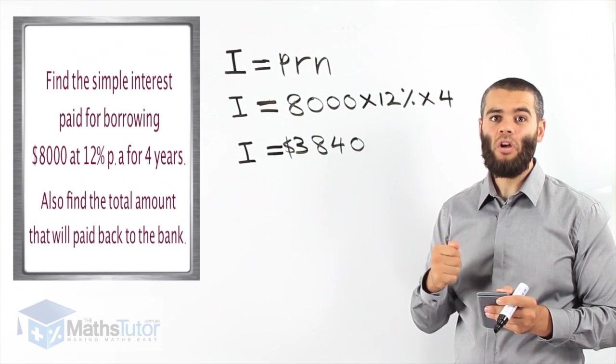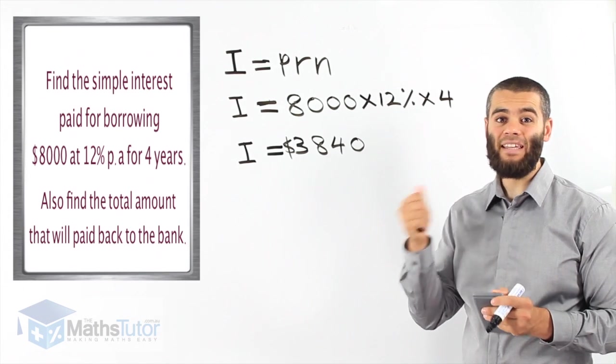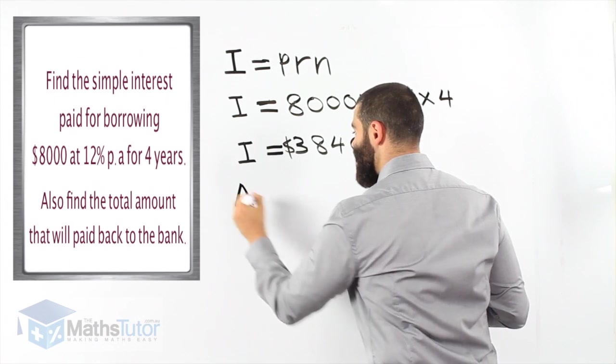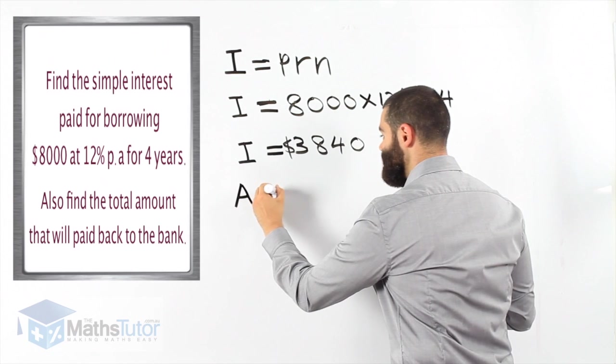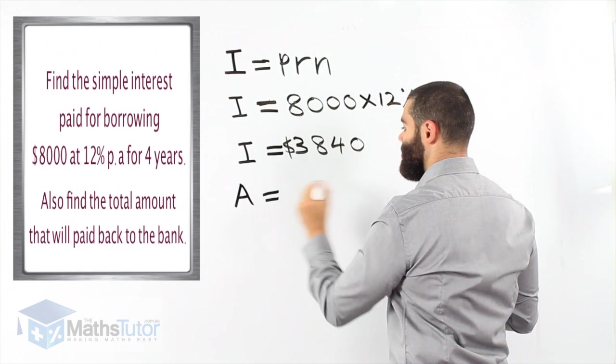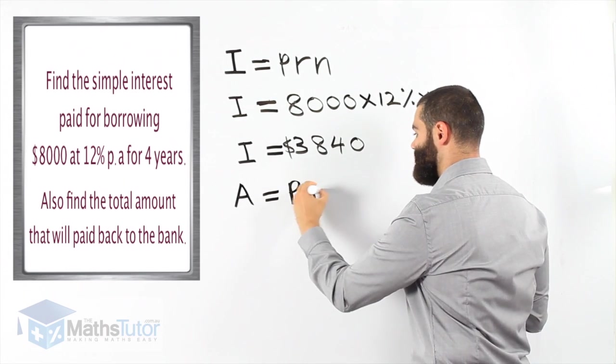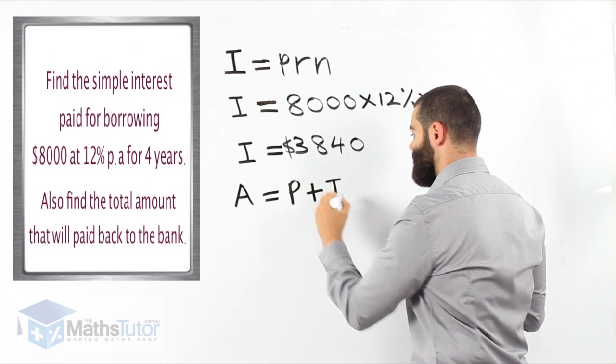They're going to pay back the $8,000 plus they're going to pay back $3,840 in interest to the bank. So, in total, if we want to know how much will this person pay back in total, they are going to pay back in total A for amount, the principal they borrowed, plus the interest.